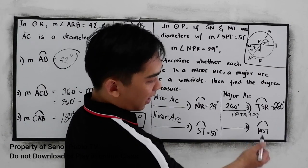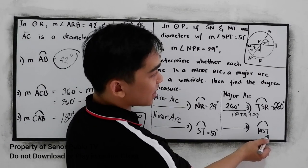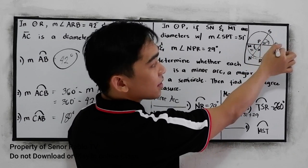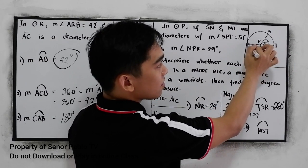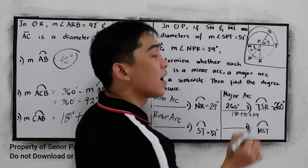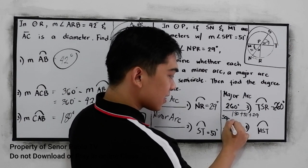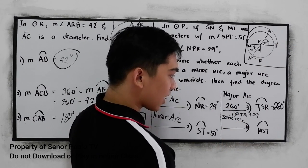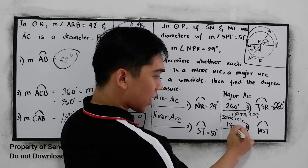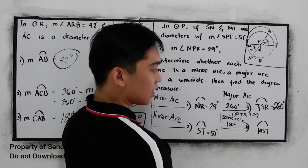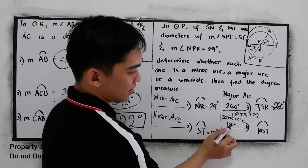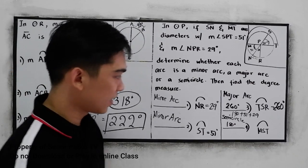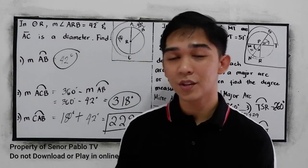Next, arc MST — that is a semicircle, which measures 180 degrees. This is constant — a fixed value of 180 degrees.